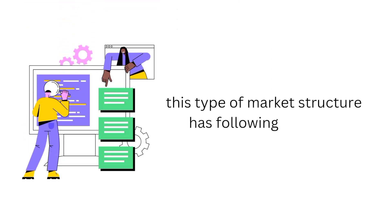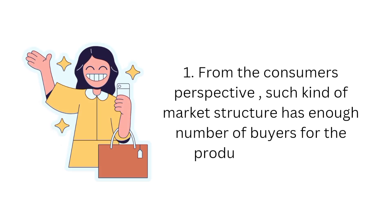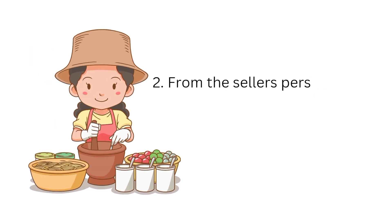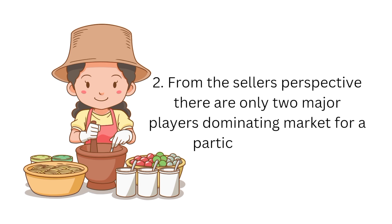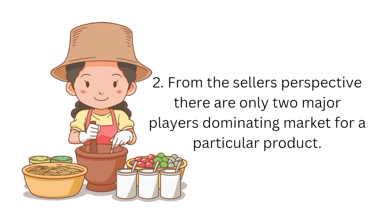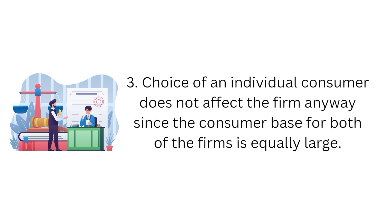This type of market structure has the following features. From the consumer's perspective, such a market structure has enough number of buyers for the product in demand. From the seller's perspective, there are only two major players dominating the market for a particular product. The choice of an individual consumer does not affect the firm anyway, since the consumer base for both firms is equally large.